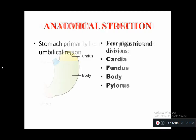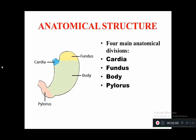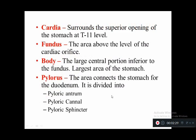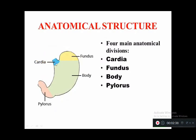The anatomical divisions of the stomach are cardia, fundus, body, and pylorus. Cardia surrounds the superior opening of the stomach at the T11 thoracic vertebral level, located in the superior portion of the stomach. Fundus is the area above the level of the cardiac orifice. The body is the larger central portion, inferior to the fundus.